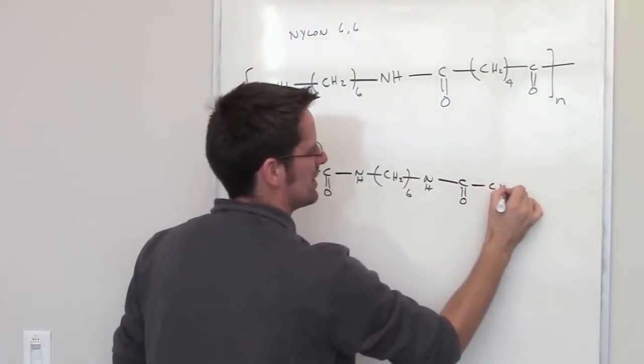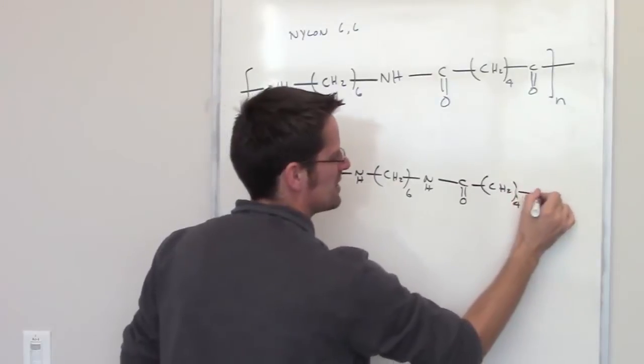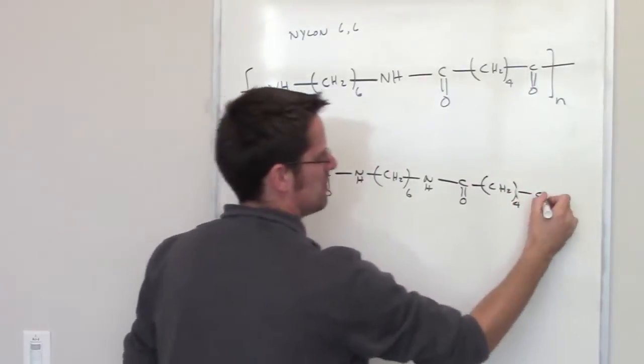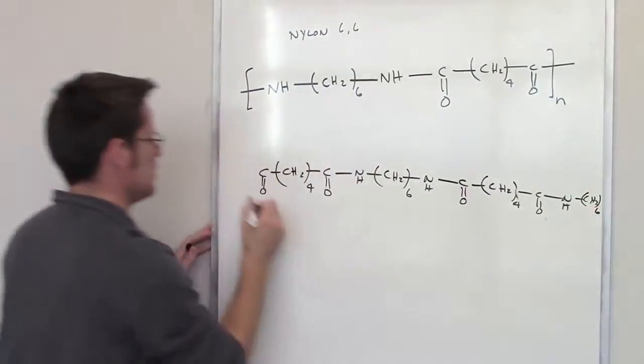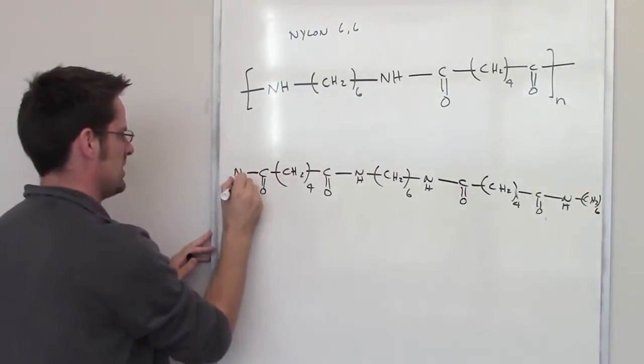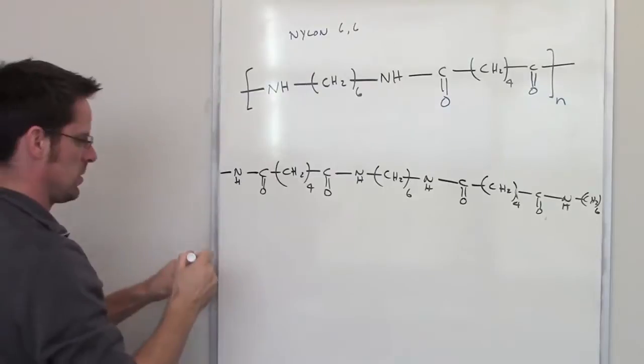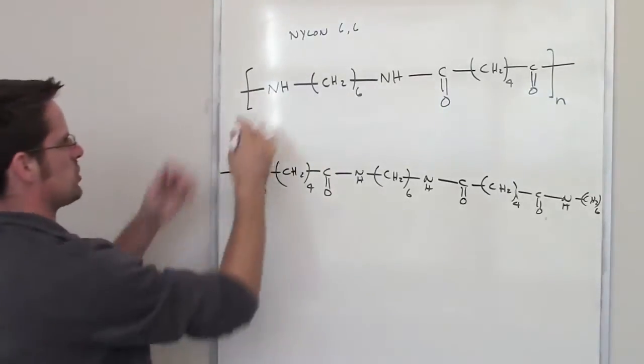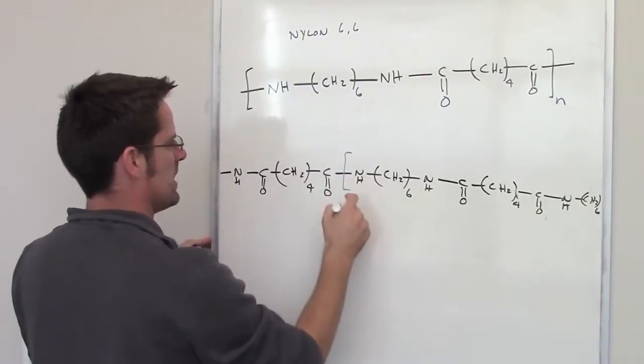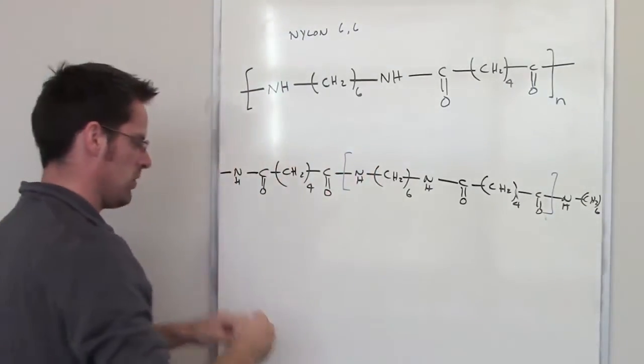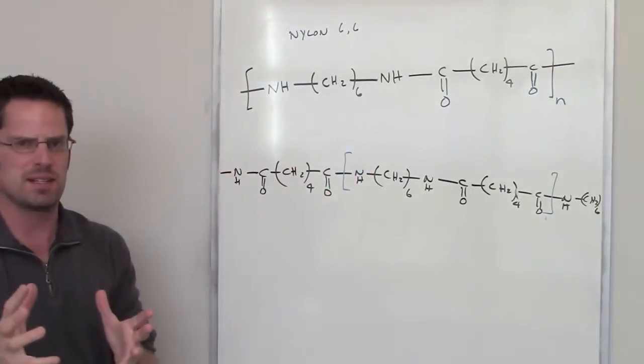I've got a carbon stuck to four CH2s, stuck to another carbon double bonded oxygen, stuck to an NH, stuck to six CH2s, and then an NH stuck to six CH2s. This is the shorthand way of saying here's what you've got happening over and over.